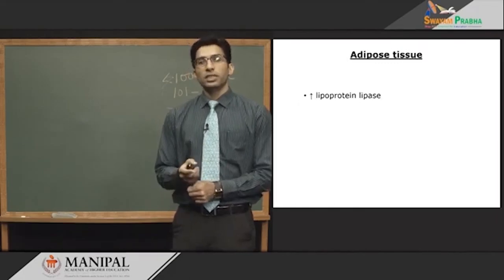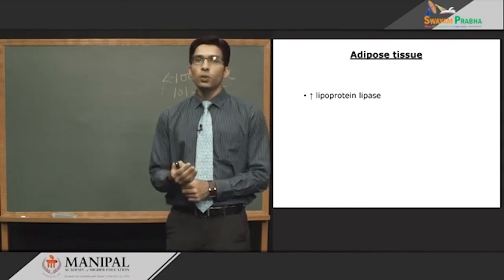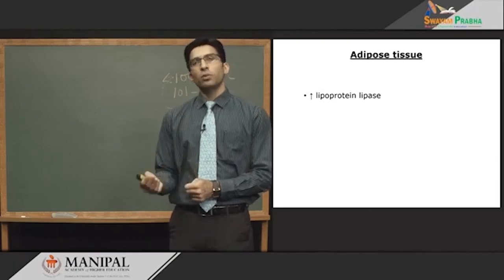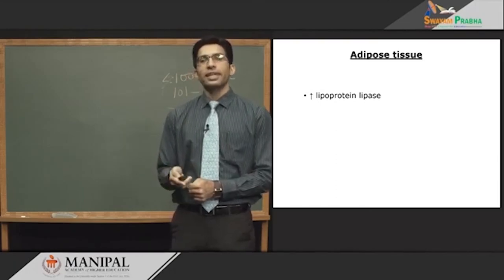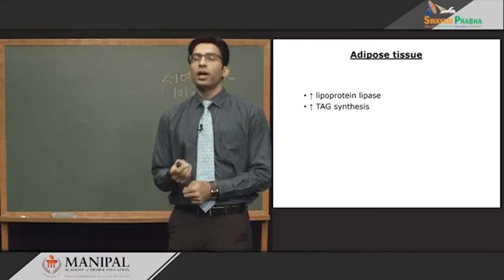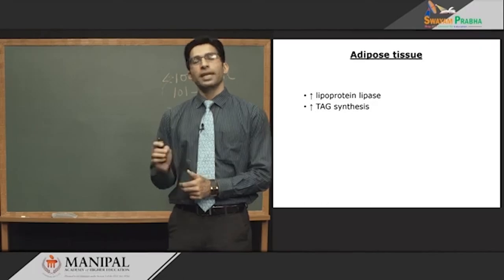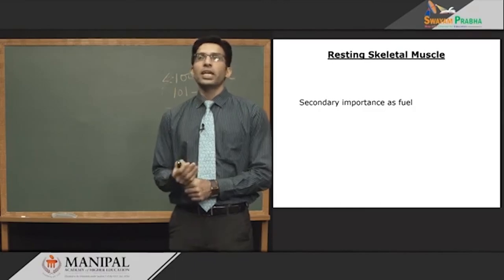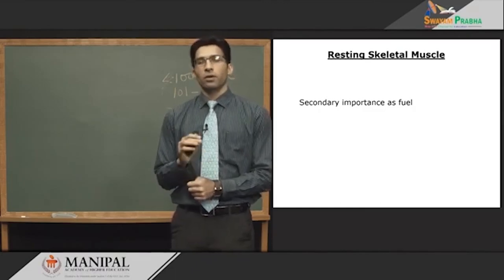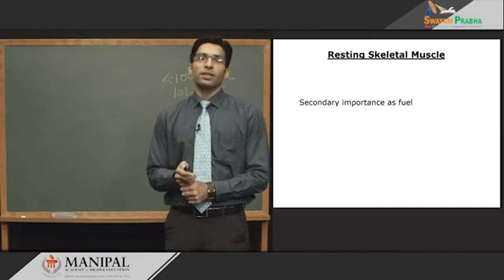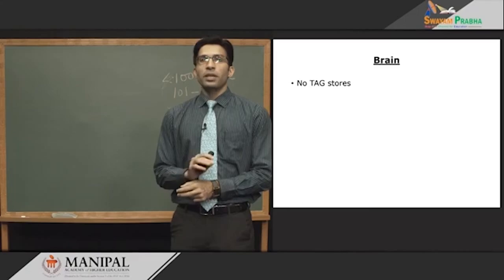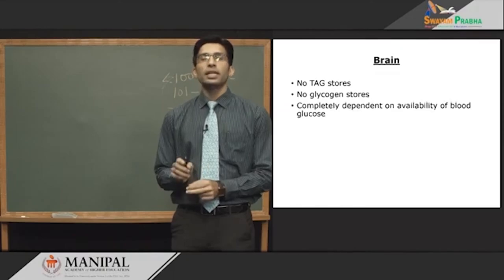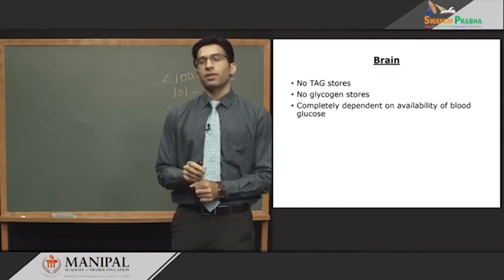In skeletal muscle in the well-fed state, fat is a secondary fuel; they primarily depend on glucose for energy. The brain does not synthesize triacylglycerol, has no glycogen stores, and is completely dependent on the availability of glucose in the well-fed state.